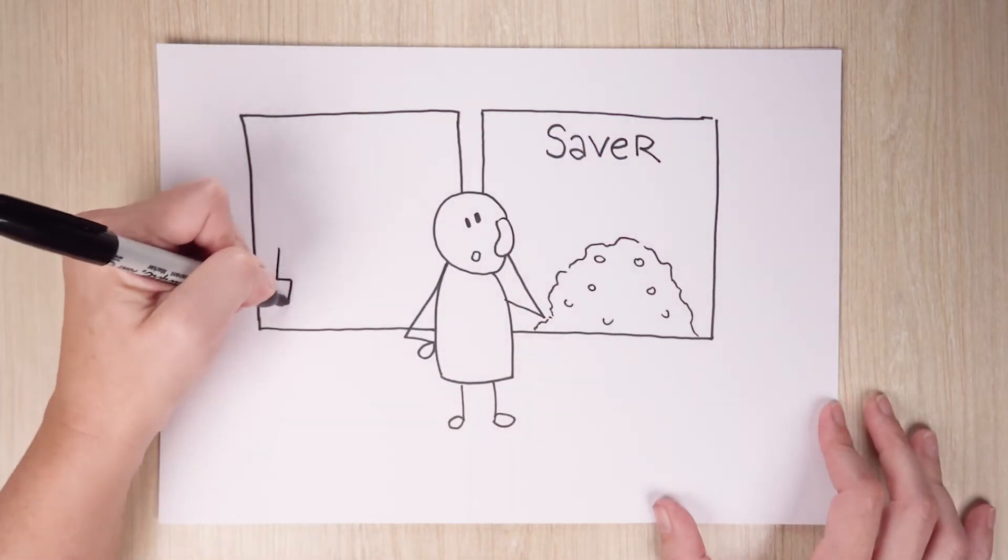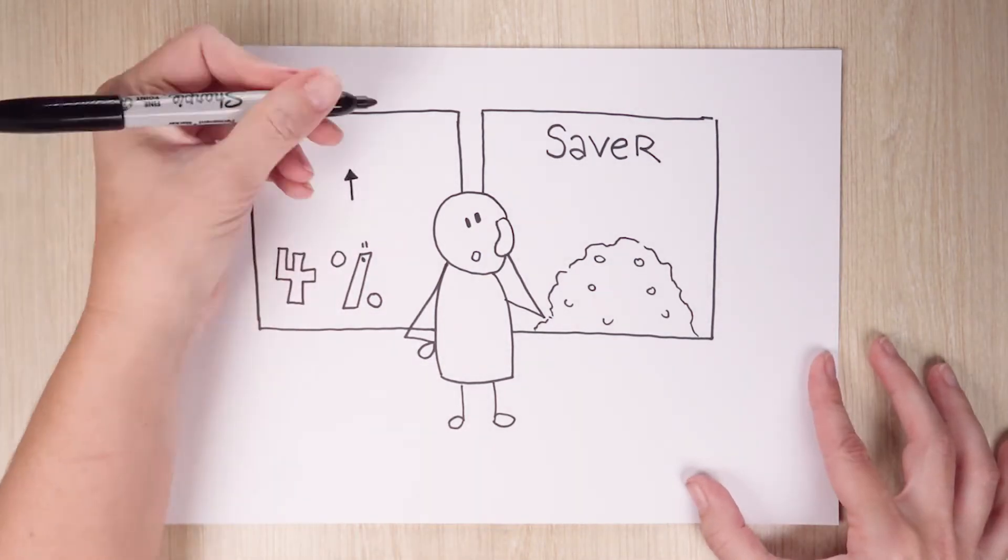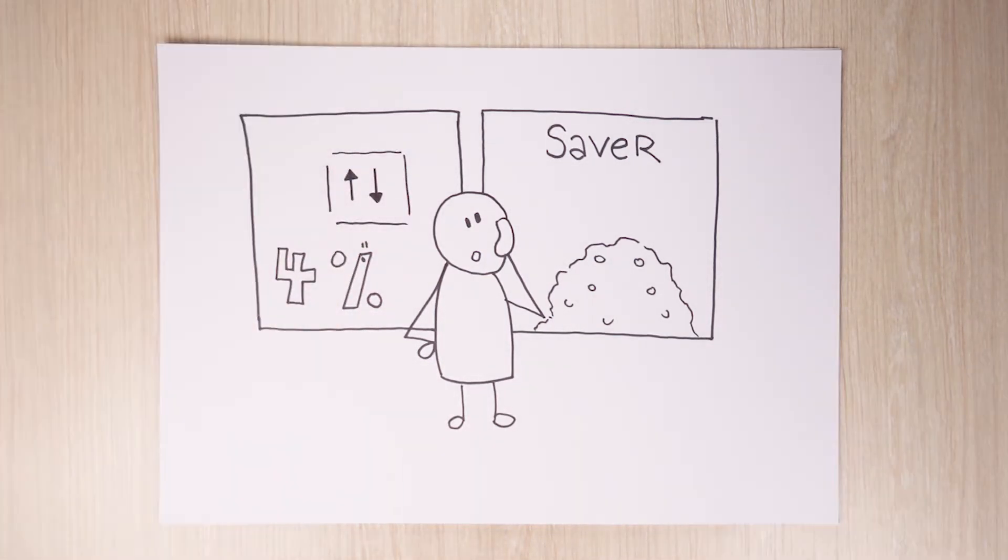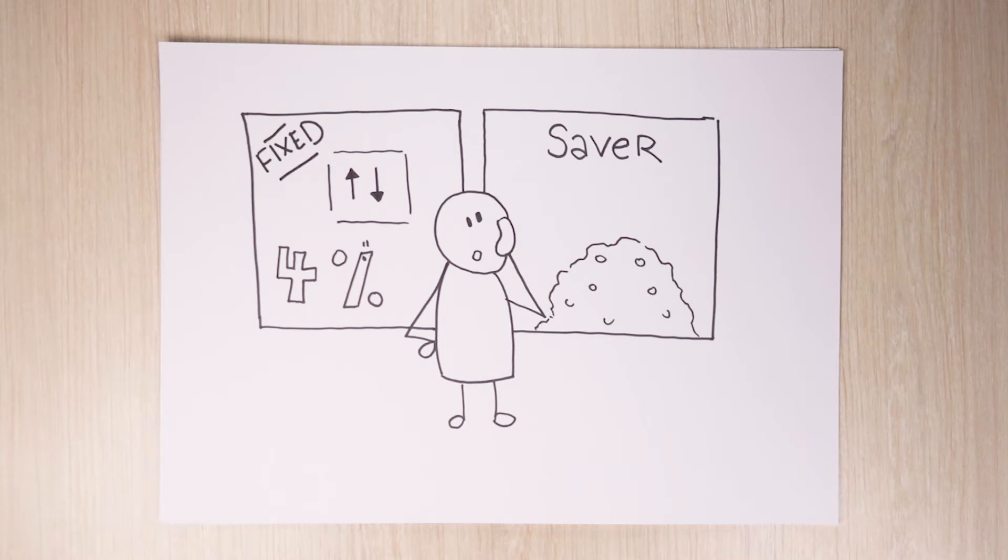As a borrower, it's a good time to check whether you're getting a competitive rate on your home loan. A good place to start is to check to see if your current rate starts with a 3. We can help with that. You may also want to think about whether a fixed rate is right for you, in case we continue to see rates rise.